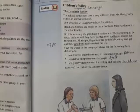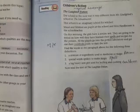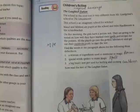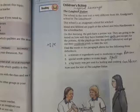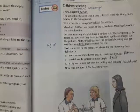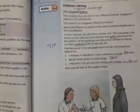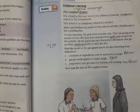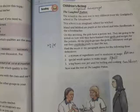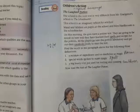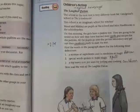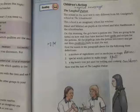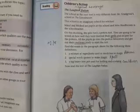Assalamu alaikum students, today we are going to start the next lesson of Progressive English Class 6 Unit 3. The lesson is The Laughter Potion, which is actually about a magical beverage. I'm going to read the text first. The school in the text is very different from Mr. Grindergrind's school in The Schoolmaster. This school is an imaginary school for witches. Maud and Mildred are pupils at the school and Miss Hardbroom is the school teacher.